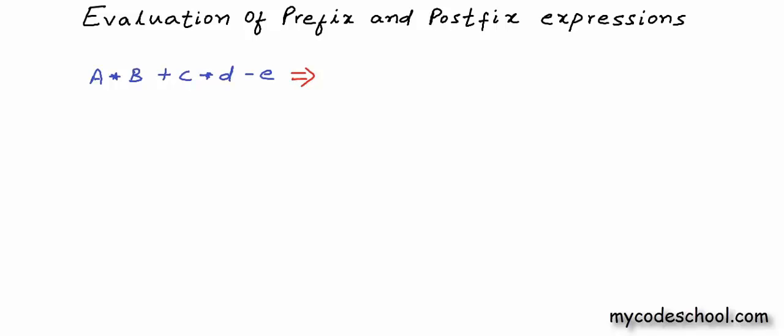What we can actually do is we can first resolve operator precedence and put parentheses at appropriate places. In this expression, we'll first do this first multiplication, then the second multiplication, then we will perform this addition, and finally the subtraction.